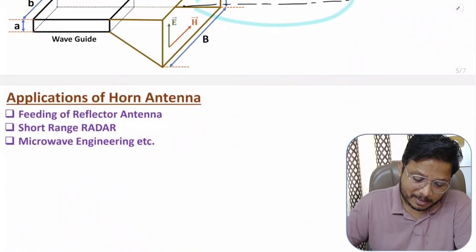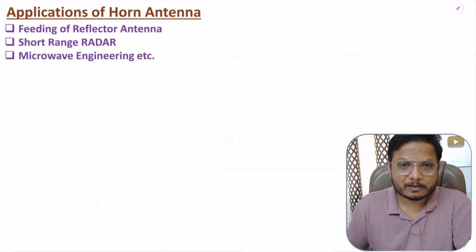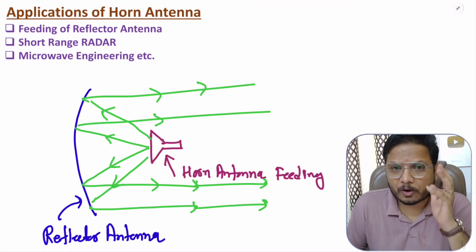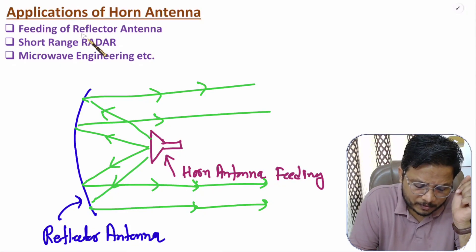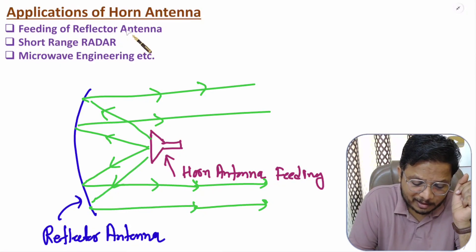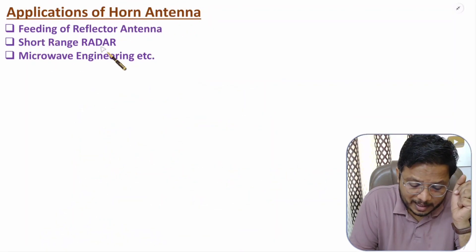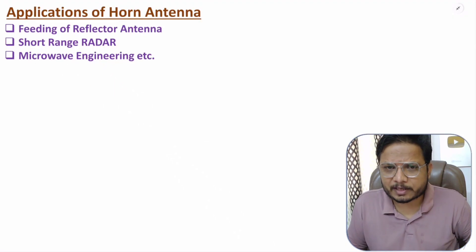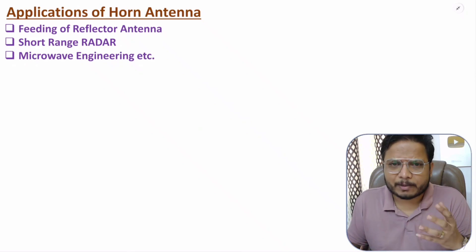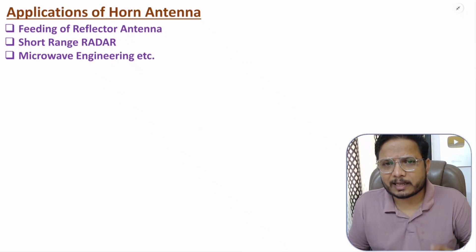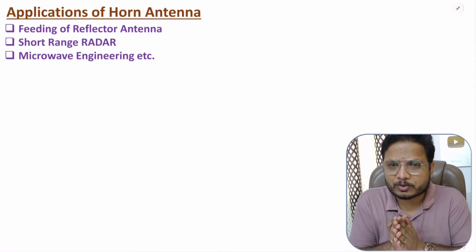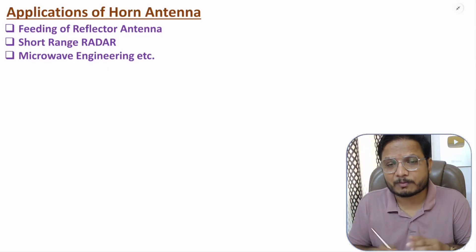Finally, regarding applications: horn antennas are commonly used in the feeding of reflector antennas. They are also used for short range radar and have many applications in microwave engineering. If you have any questions or additional applications to share, note them in the comment section. Thank you so much for watching this video.